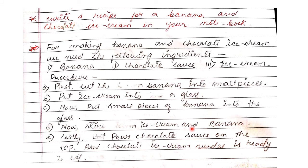Now stir the ice cream and banana — mix them together. Lastly, pour chocolate sauce on the top and the chocolate ice cream sundae is ready to eat. This is all about recipe writing for a banana and chocolate ice cream sundae.